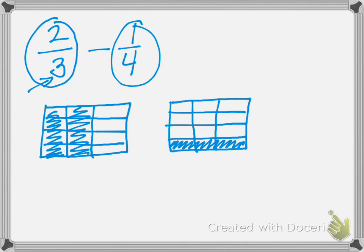Counting the sections: the first rectangle has 12 sections, and the second rectangle also has 12 sections.